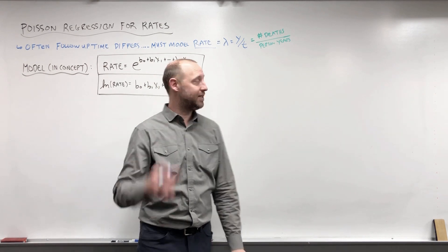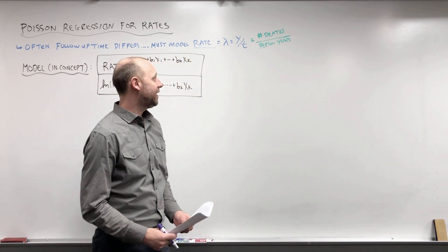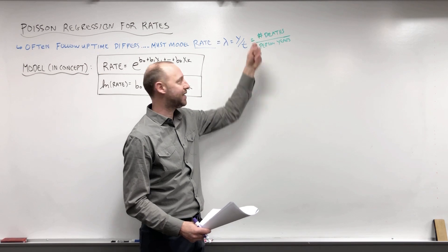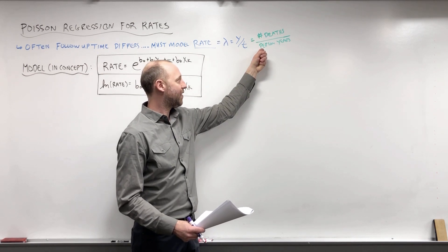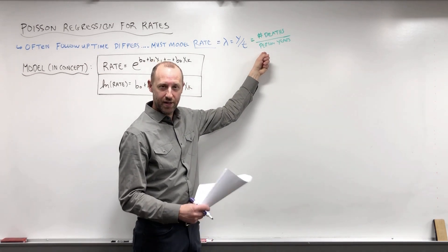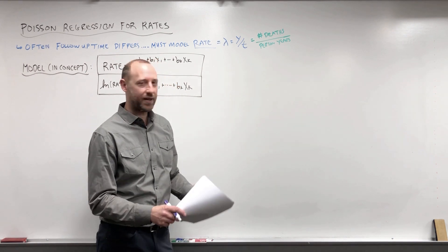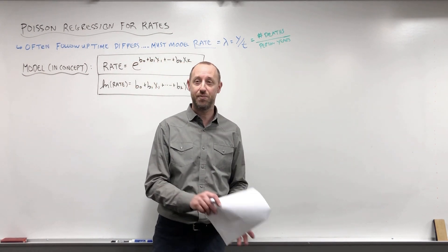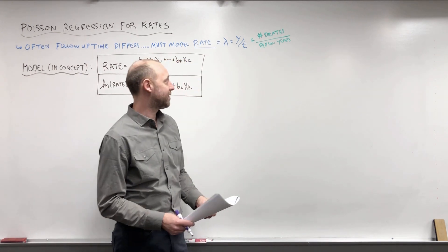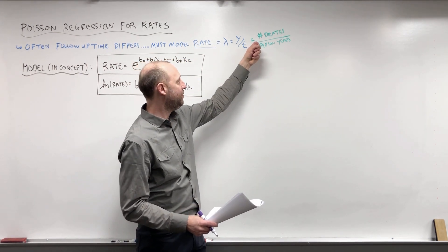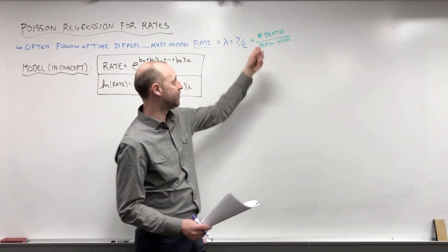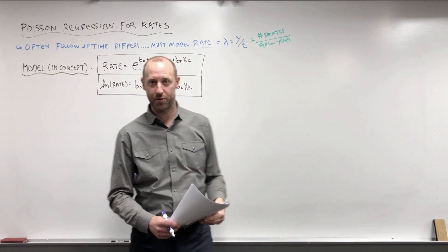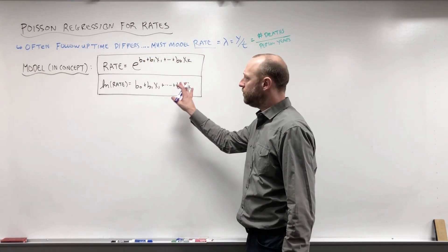The example dataset we've been working with in this course is the British doctors data, where we're looking at the number of deaths from lung cancer divided by person-years exposure in each of the groups. We've aggregated data into groups based on smoking (yes or no) and age categories, and within each group we look at the lung cancer death rate, which is the number of deaths divided by the person-years exposure.